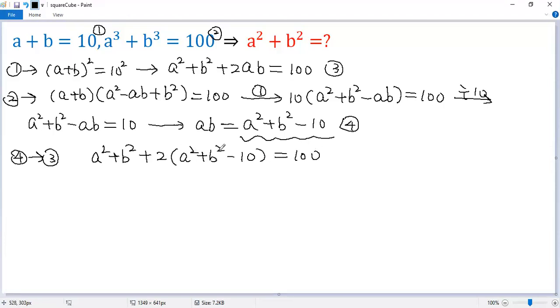So 2 times a squared plus b squared plus 1 a squared plus b squared. So actually we get 3 times a squared plus b squared. And 2 times negative 10, negative 20. The right side is 100. Now both sides add 20. So we get 3 times a squared plus b squared equals 120.